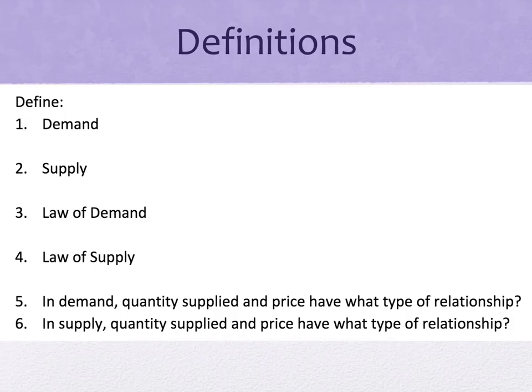Number one: demand is defined as the willingness to buy a good or service and the ability to pay for it — willingness and ability to pay is crucial for consumers. Number two: supply is the willingness and ability of producers to offer goods and services for sale. This is about producers — people that are making the things — and they also have to be willing and able.